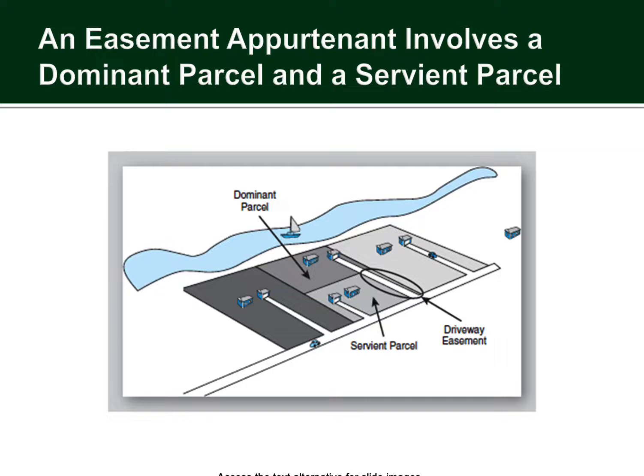Here's another visual example of easements — actually a number of easements. You'll see an example of a driveway easement, where one property has the right to have a driveway on another's property so that they can access their own. The parcel or land which is encumbered by that driveway is the servient parcel. When I took the California real estate license exam some years back, all these easement definitions ended up being on the exam — worth memorizing if you plan to sit for it.